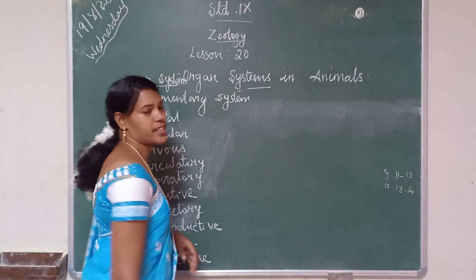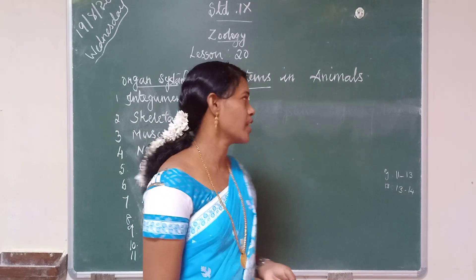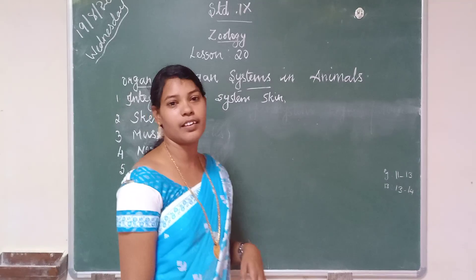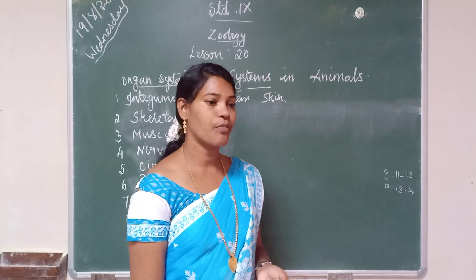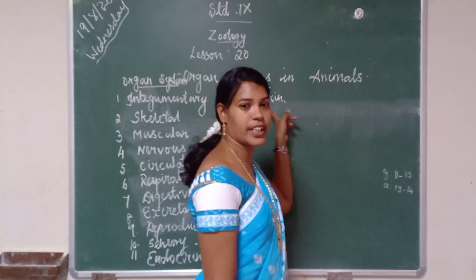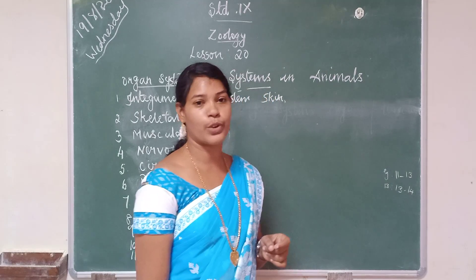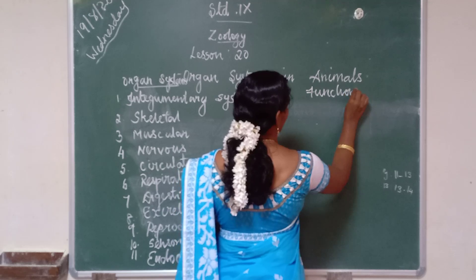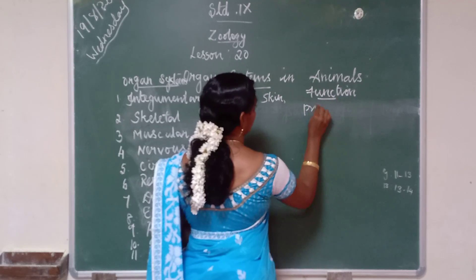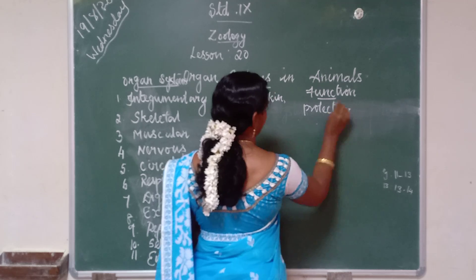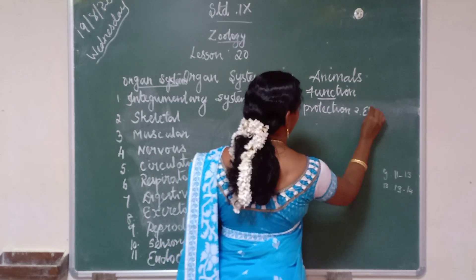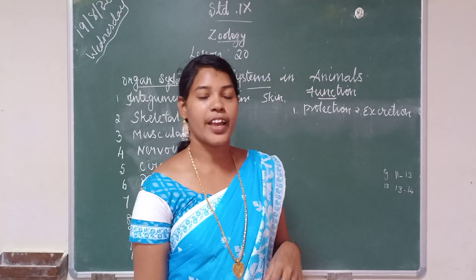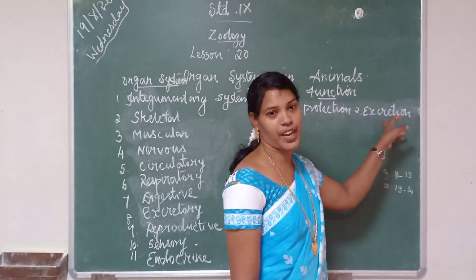The first one is the integumentary system. Integumentary means skin. The organs are skin and skin glands. We all know skin is the outer covering of our body. Its functions are protection and excretion.